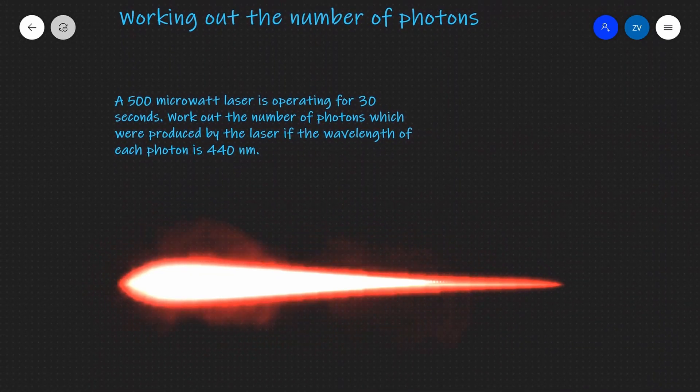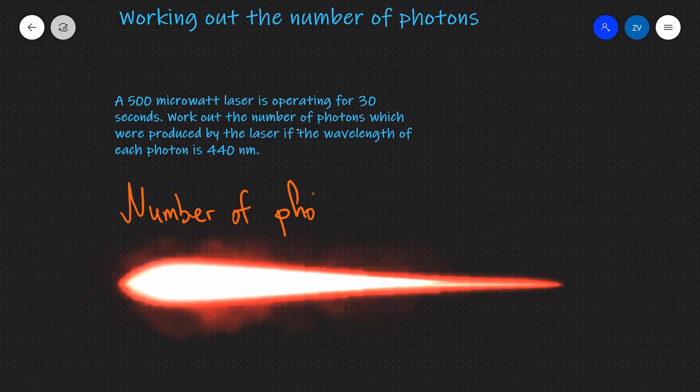Now, the next equation is not given in your formula sheet. However, it is one which we can very easily deduce. Now, the number of photons, we'll just write that. So number of photons, that's going to equal your total energy divided by your photon energy.